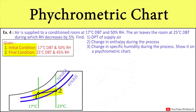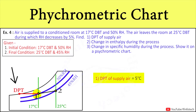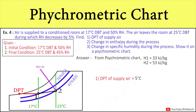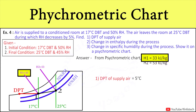We have the process 1 to 2. First, we want to find out the dew point temperature of the supply air. At point 1, the dew point temperature is 5°C. Next, we want to find out the change in enthalpy during the process. Enthalpy at point 2, which is H2, is 53 kJ/kg, and enthalpy at point 1, which is H1, is 33 kJ/kg.